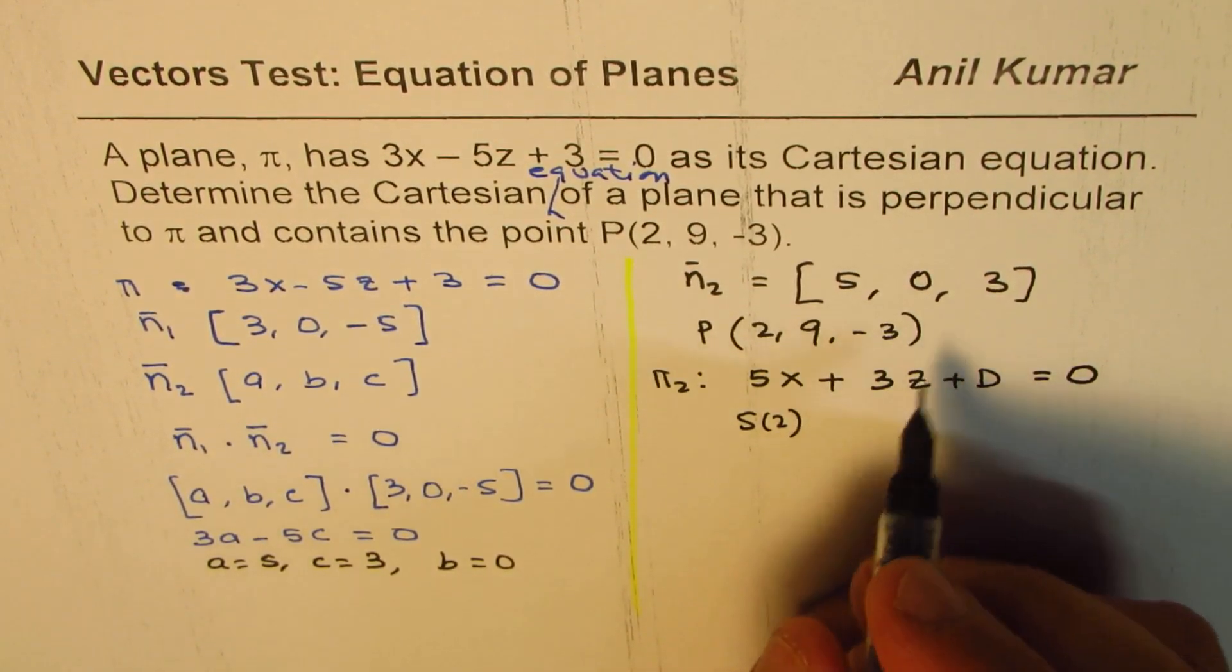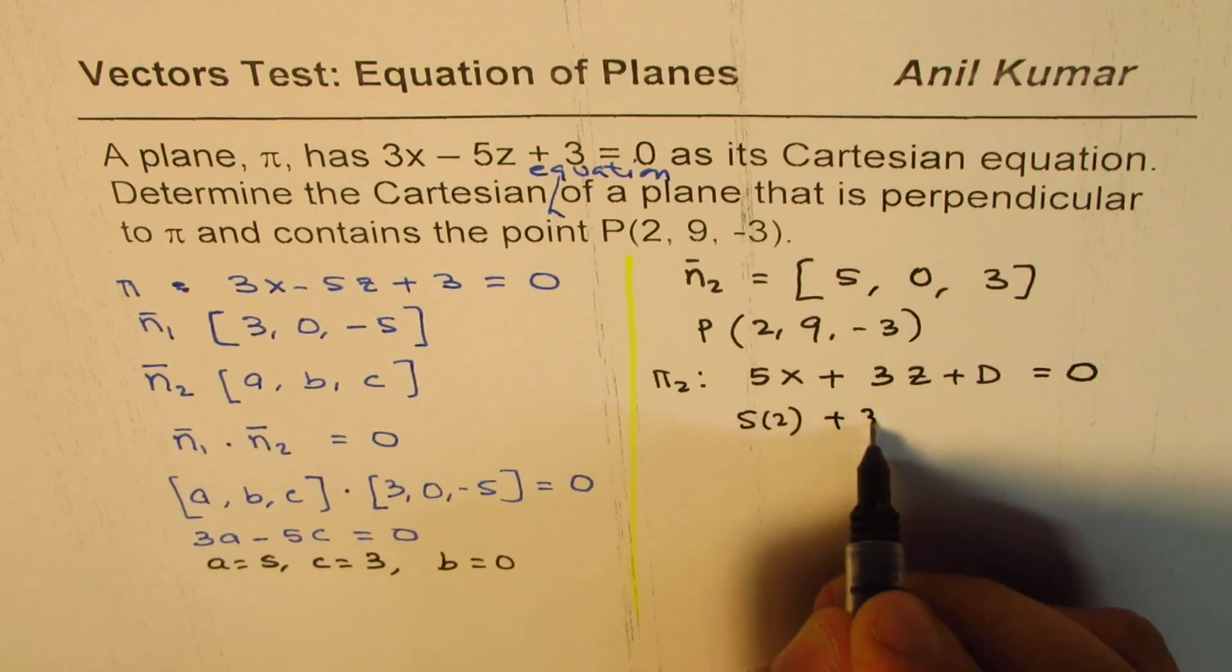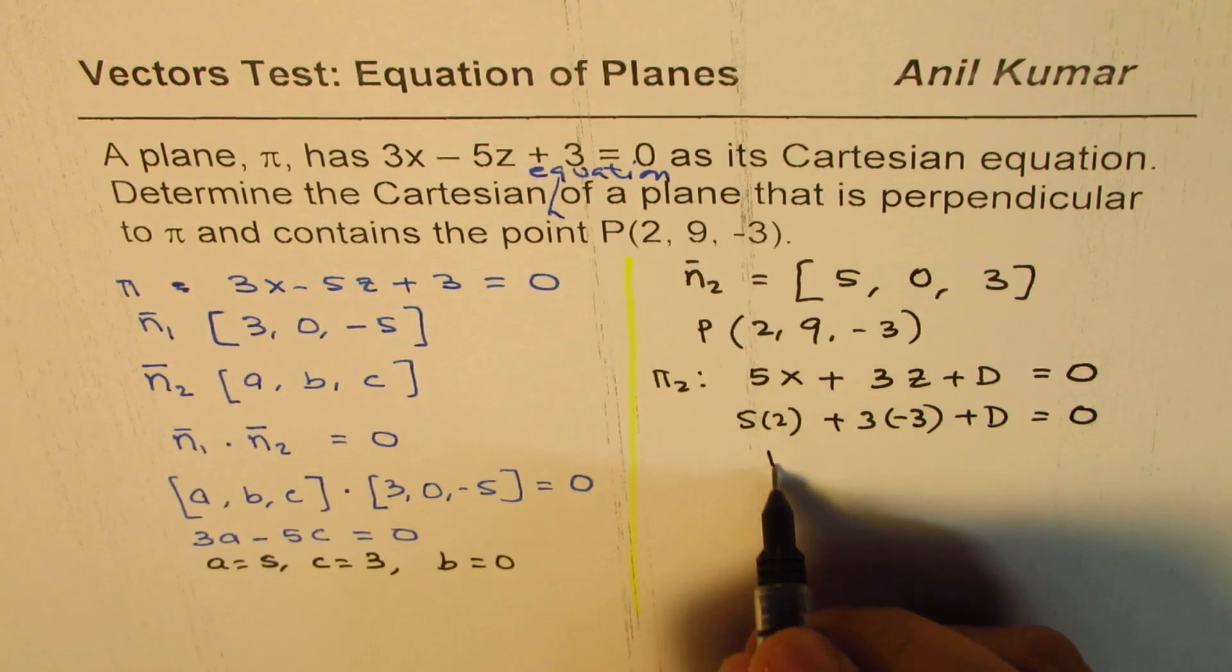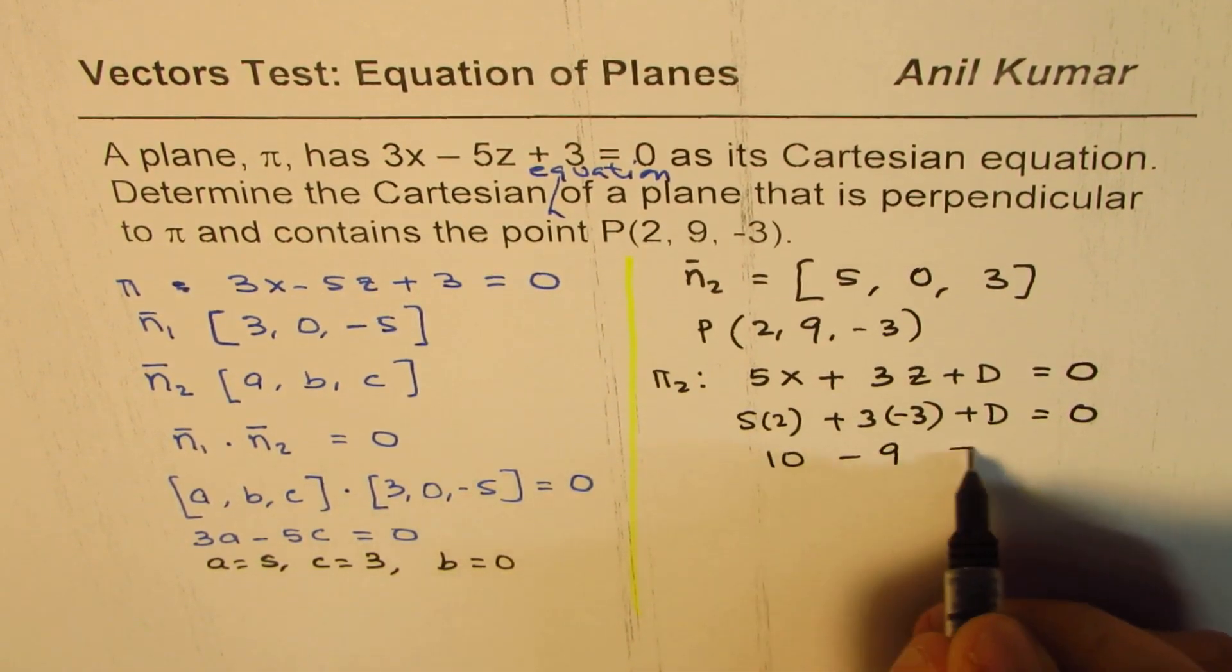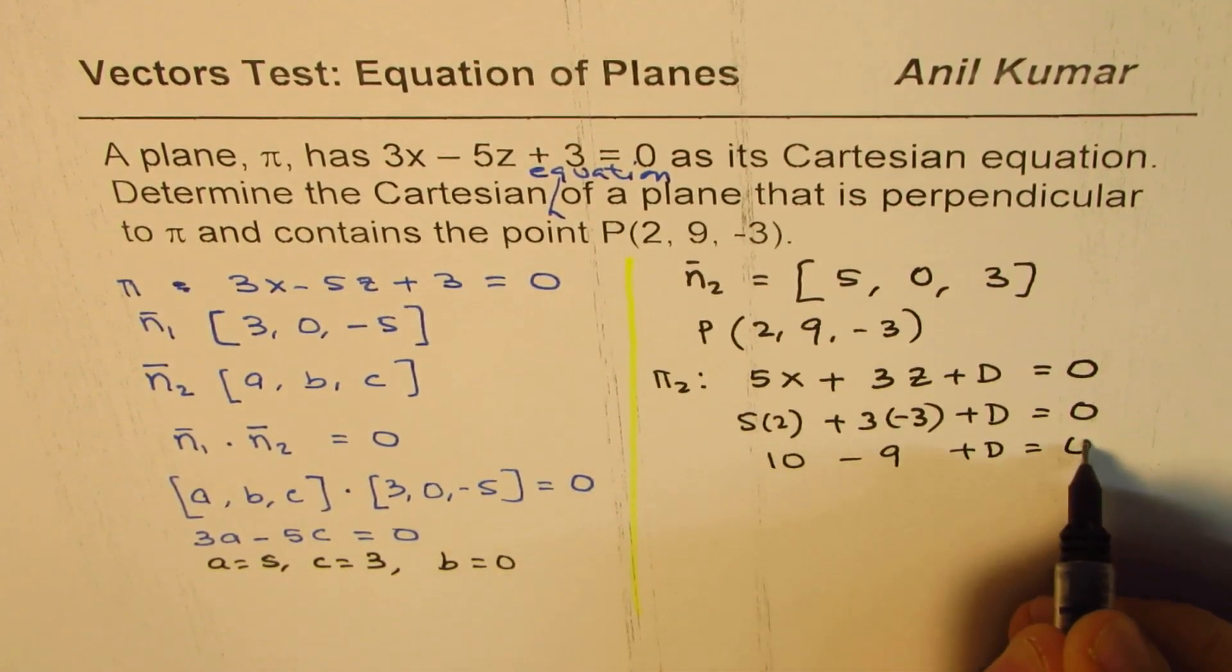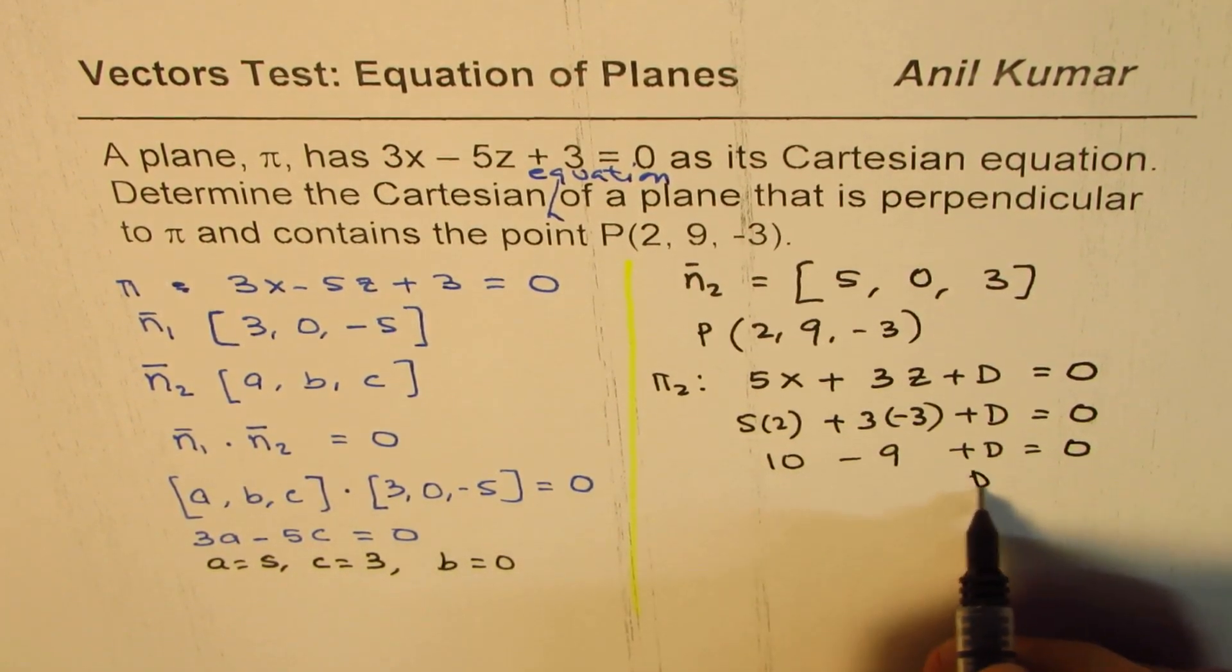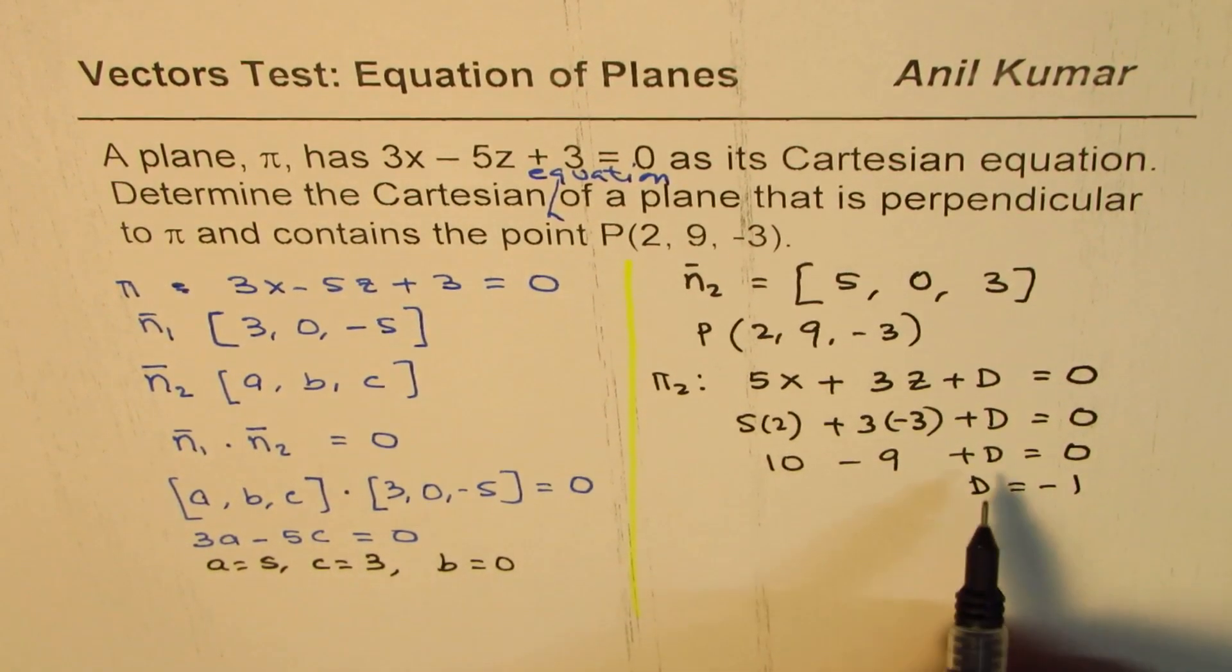We get 5(2) + 0(9) + 3(-3) + d = 0. That gives us 10 - 9 + d = 0, so 1 + d = 0, which means d = -1.